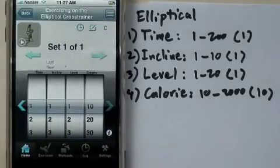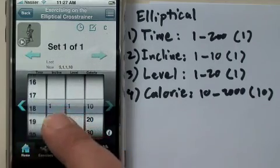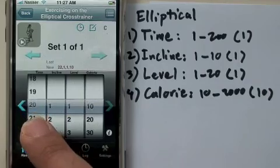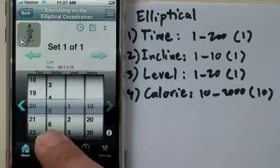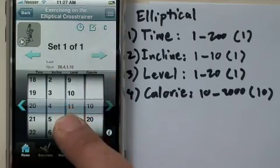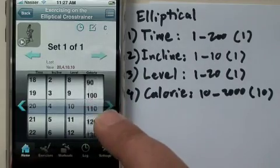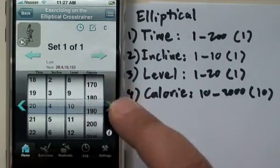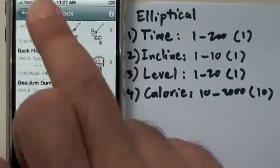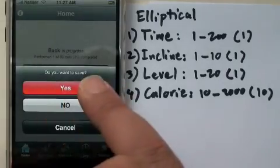I have my four data wheels. Now I can keep track of, let's say, today I did 20 minutes of incline 4, level intensity was 10, and the amount of calorie I burnt was 190. The preview is shown there. I'm going to end this workout session. Save. Yes.